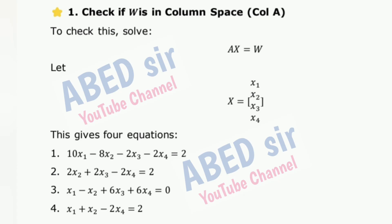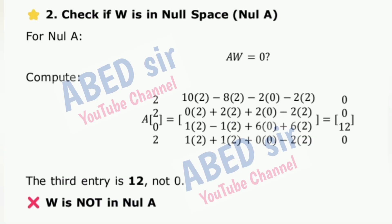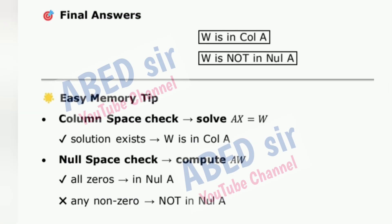Part 1 — Check if W is in Column Space / Kernel(A): solve AX = W. Let X be the unknown vector. This gives 4 equations. From equation 2 and equation 4, substituting back and solving the system gives a valid solution. So W is in Kernel(A). Part 2 — Check if W is in Null Space, Null(A): for Null(A), we need AW = 0. Computing AW, the third entry is 12, not 0. Therefore W is not in Null(A). Final answers: W is in Kernel(A); W is not in Null(A).